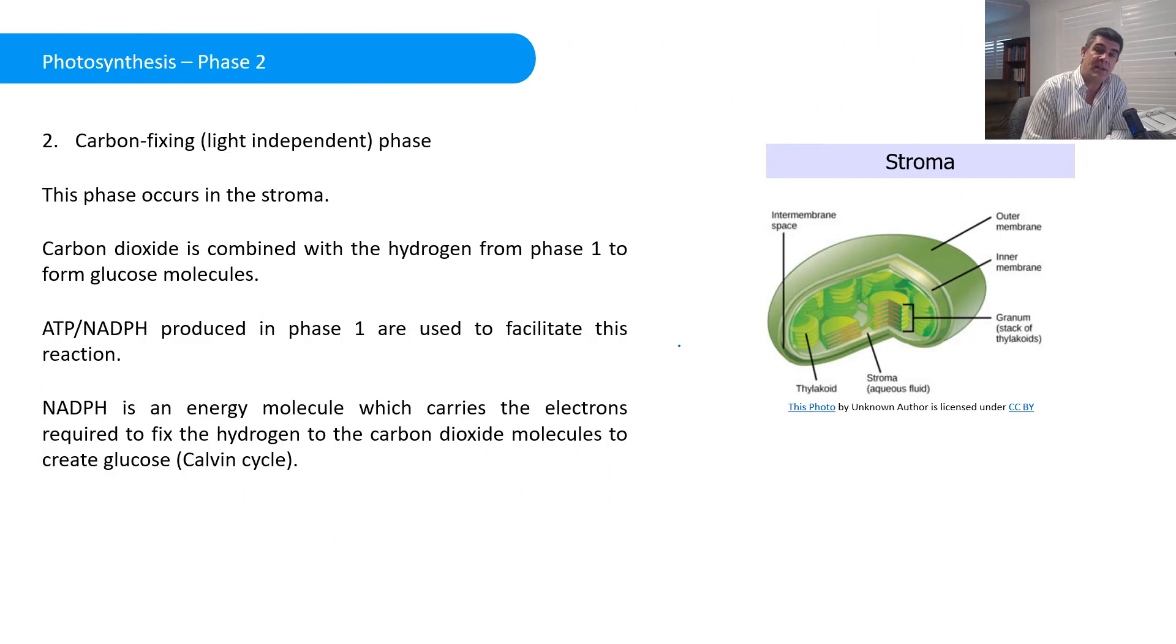So the second phase is a light independent phase. It doesn't need light. It can occur during the daytime, but it doesn't need light for this particular phase to be undertaken. And this occurs in the stroma. This is the stage where the hydrogen that's come from the water molecule, so the breakdown of the water molecule's released oxygen, and the hydrogen is being transported through into the stroma. And it's being carried there along with electrons and lots of energy. And that allows for the transfer of, or the fixing, if you prefer, of the hydrogen to the carbon dioxide. That process of linking hydrogen and carbon dioxide is what leads us to the formation of the carbohydrate glucose, C6H12O6.